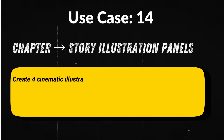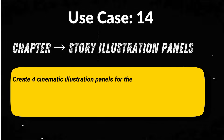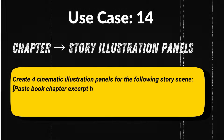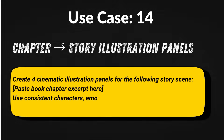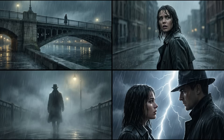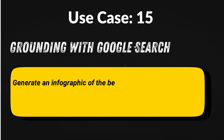Use case 14: Text to cinematic story visuals — incredible for authors and educators. Prompt: 'Create four cinematic illustration panels for the following story scene.' In seconds, your written chapter becomes a fully illustrated story sequence, with mood, lighting, and character continuity perfectly preserved.